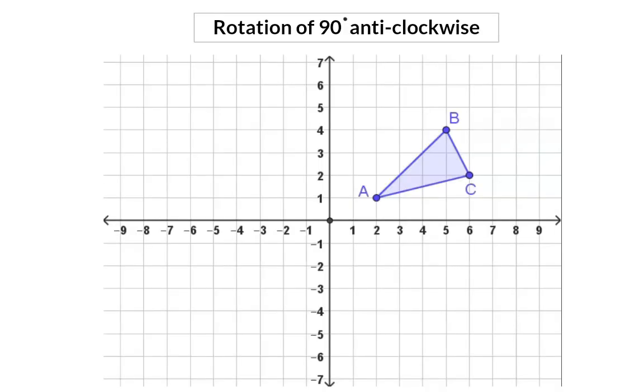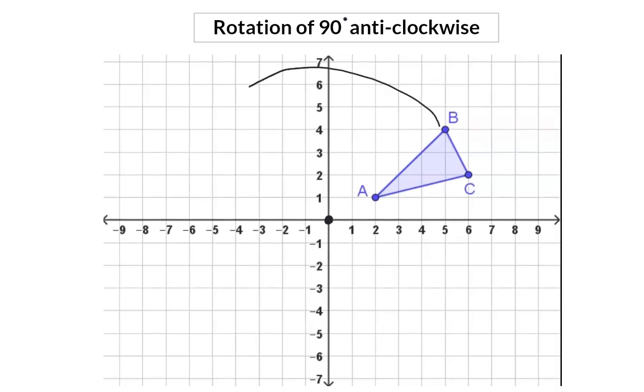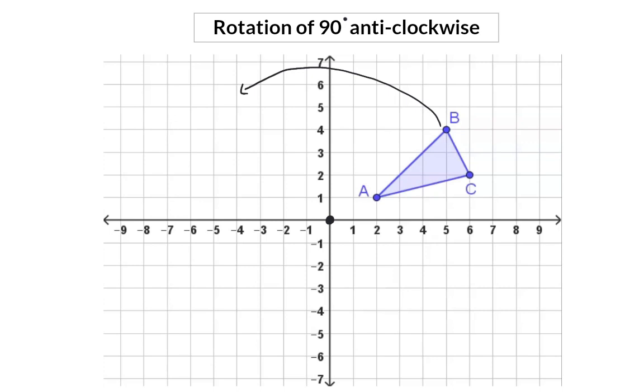Let's start by having a look at a rotation of 90 degrees anticlockwise. Remember that our origin will be the point that stays in the same position and this shape will be rotated 90 degrees anticlockwise around that point. The image of our triangle will now be positioned here and you can see that it's been rotated 90 degrees.